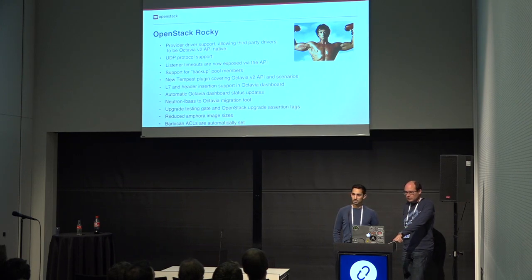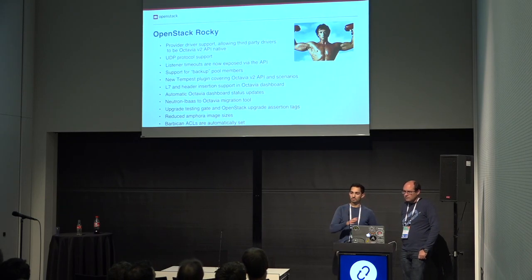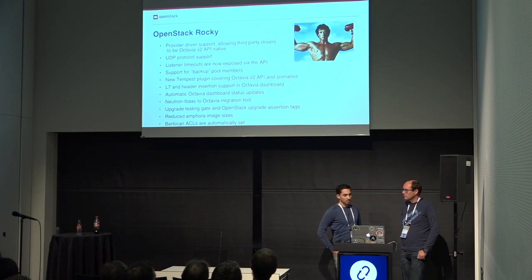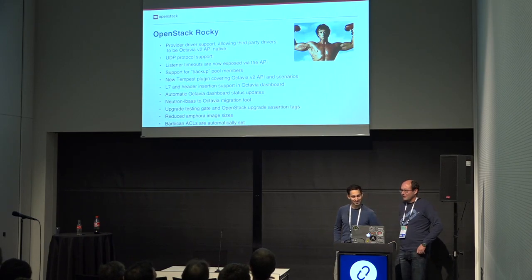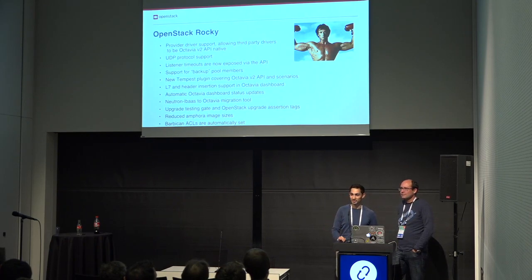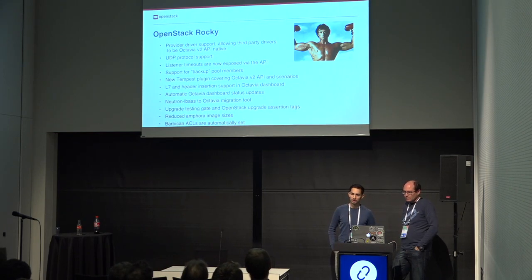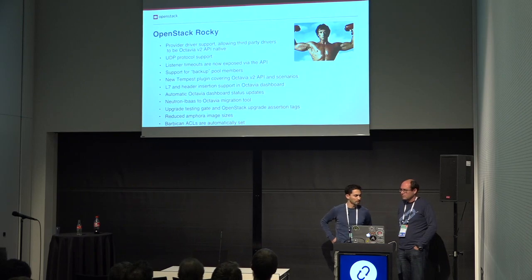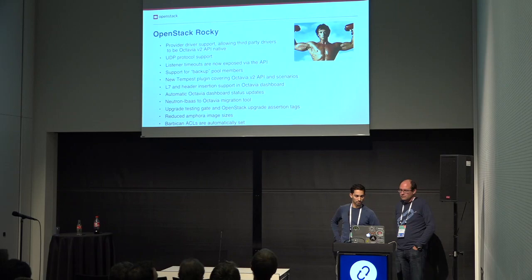There is also support for backup pool members. When you have a load balancer with a couple of members and all the members go down, if you have backup members, those backup members can take over. One use case is having a single member showing a page saying 'we are down for maintenance, come back later.' We also extensively extended our Tempest plugin repo with way more API and scenario tests. Additionally, layer seven and header insertion support is now available in the Octavia dashboard — those features were already available through the Octavia API and client, and now you can configure them using the dashboard.